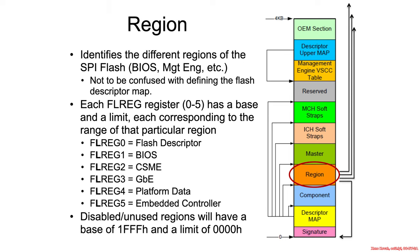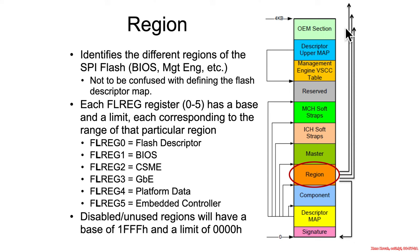The region section is one of the most interesting parts because it says where does the flash descriptor start — well, of course it's going to start at offset 0 or 10 — where does the BIOS region start, where does the CSME region start, etc. So this provides pointers out of the flash descriptor so that the hardware knows where the other regions are.